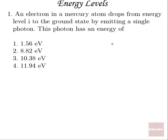So number one, an electron in a mercury atom drops from energy level i to the ground state by emitting a single photon. This photon has an energy of, well, to do this, the energy of our photon is going to be the energy of our initial level minus our final energy level.